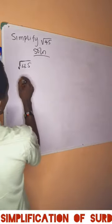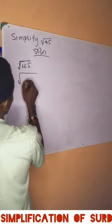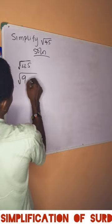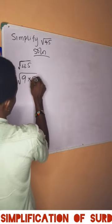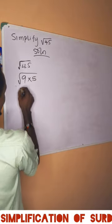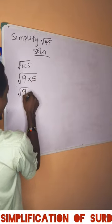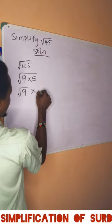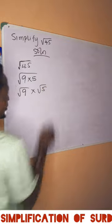So let's solve. Simplifying this, you are going to have square root of 9 times 5. We can break this apart as square root of 9 times square root of 5.